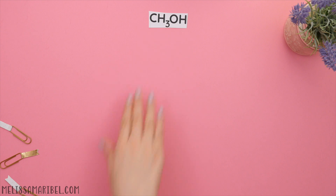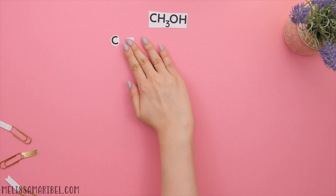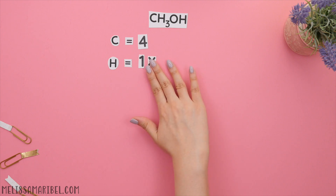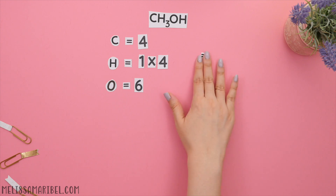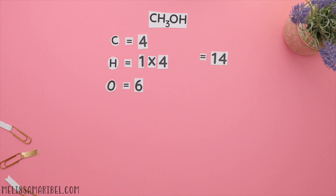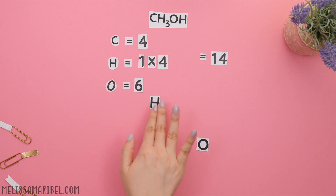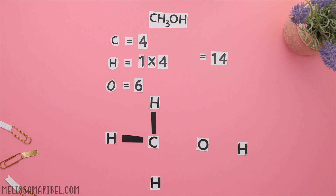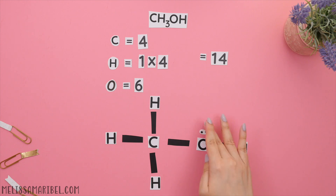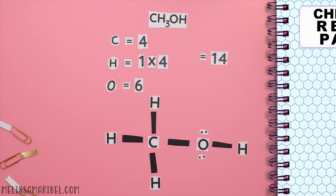Here's our fifth structure. Identify the valence electrons: carbon has four, each hydrogen gets one and we have four hydrogens so four, oxygen has six. Four plus four plus six is fourteen valence electrons. Our central atoms are carbon and oxygen. The chemical formula tells us there are three hydrogens surrounding the carbon atom and only one hydrogen bonded to the oxygen. Placing our single bonds, we will see that we only have ten valence electrons and we need four more, so oxygen needs two lone pairs since carbon already has the maximum amount of bonds. This is the correct Lewis structure.